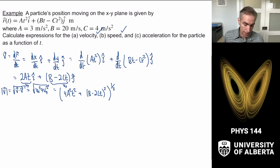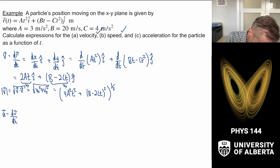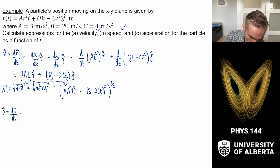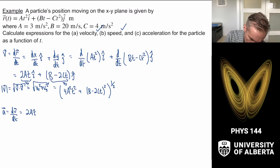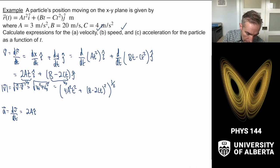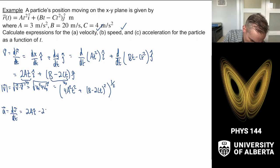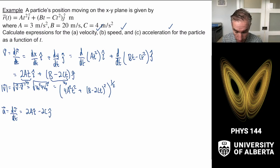The acceleration is dv/dt. Taking the time derivative of 2at î: that's just 2a î. For the j-component, the time derivative of the constant b is zero, and d/dt of −2ct gives −2c. So the acceleration vector is 2a î − 2c ĵ. We now have the velocity, speed, and acceleration for this particle.